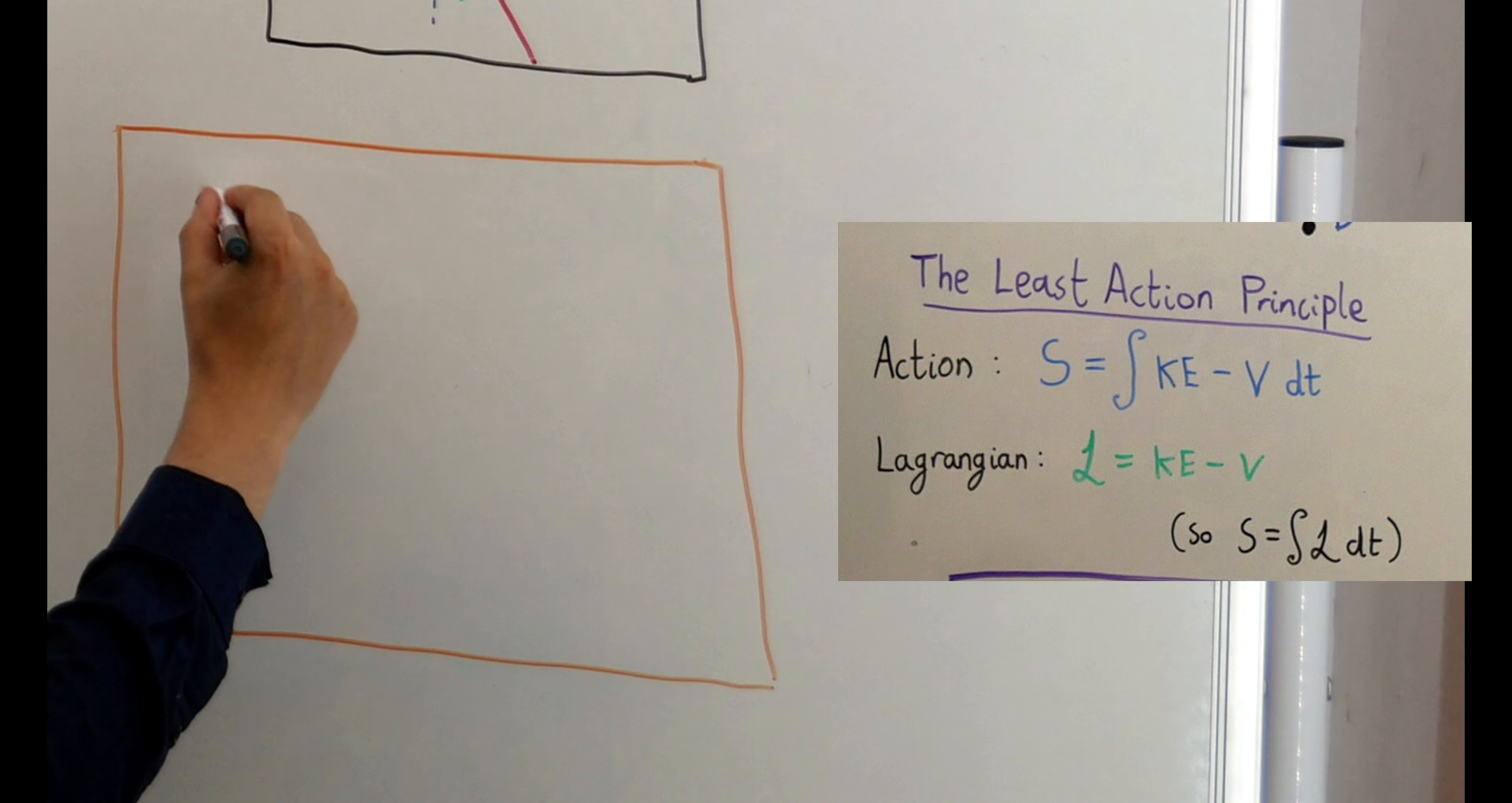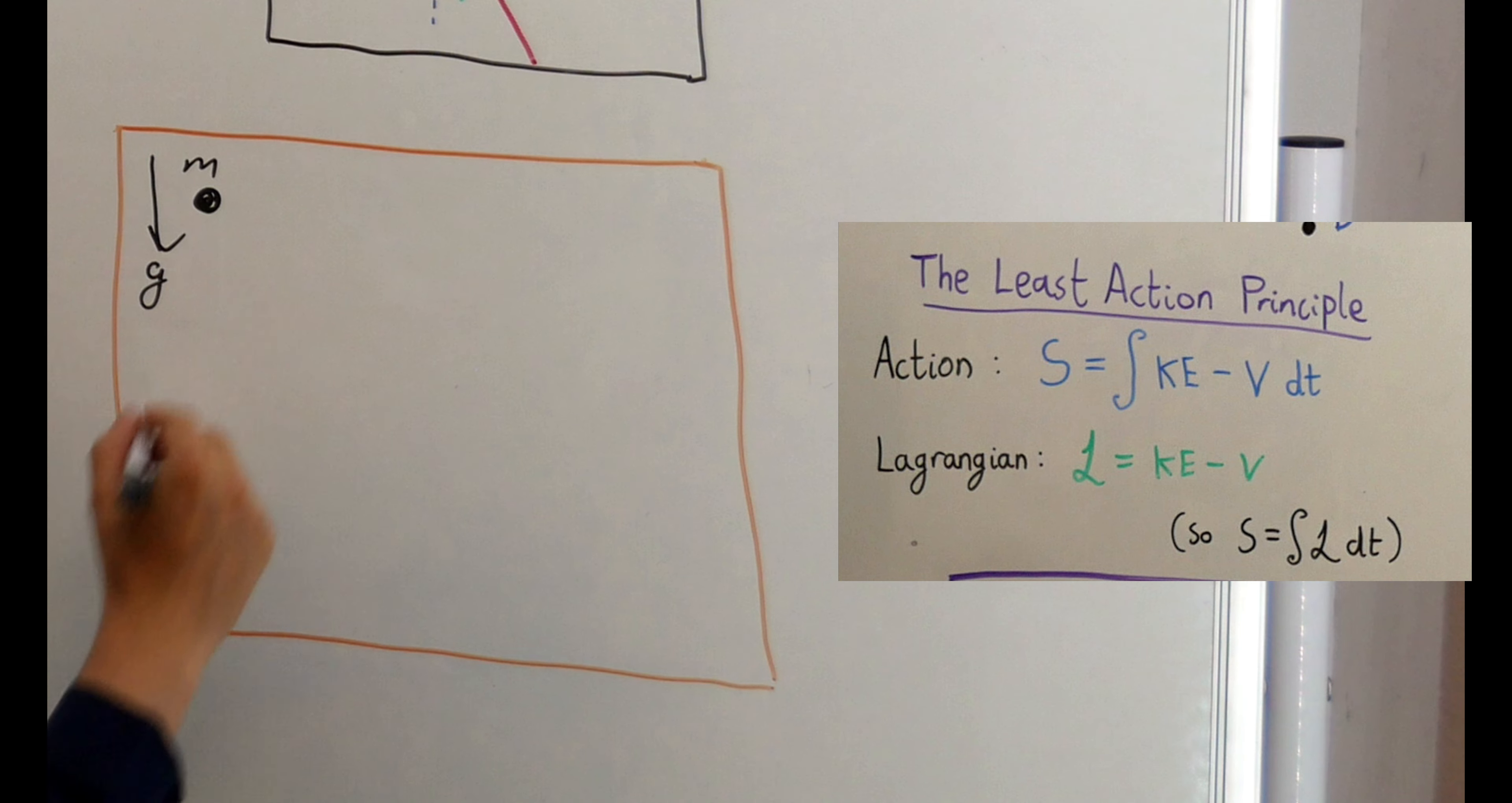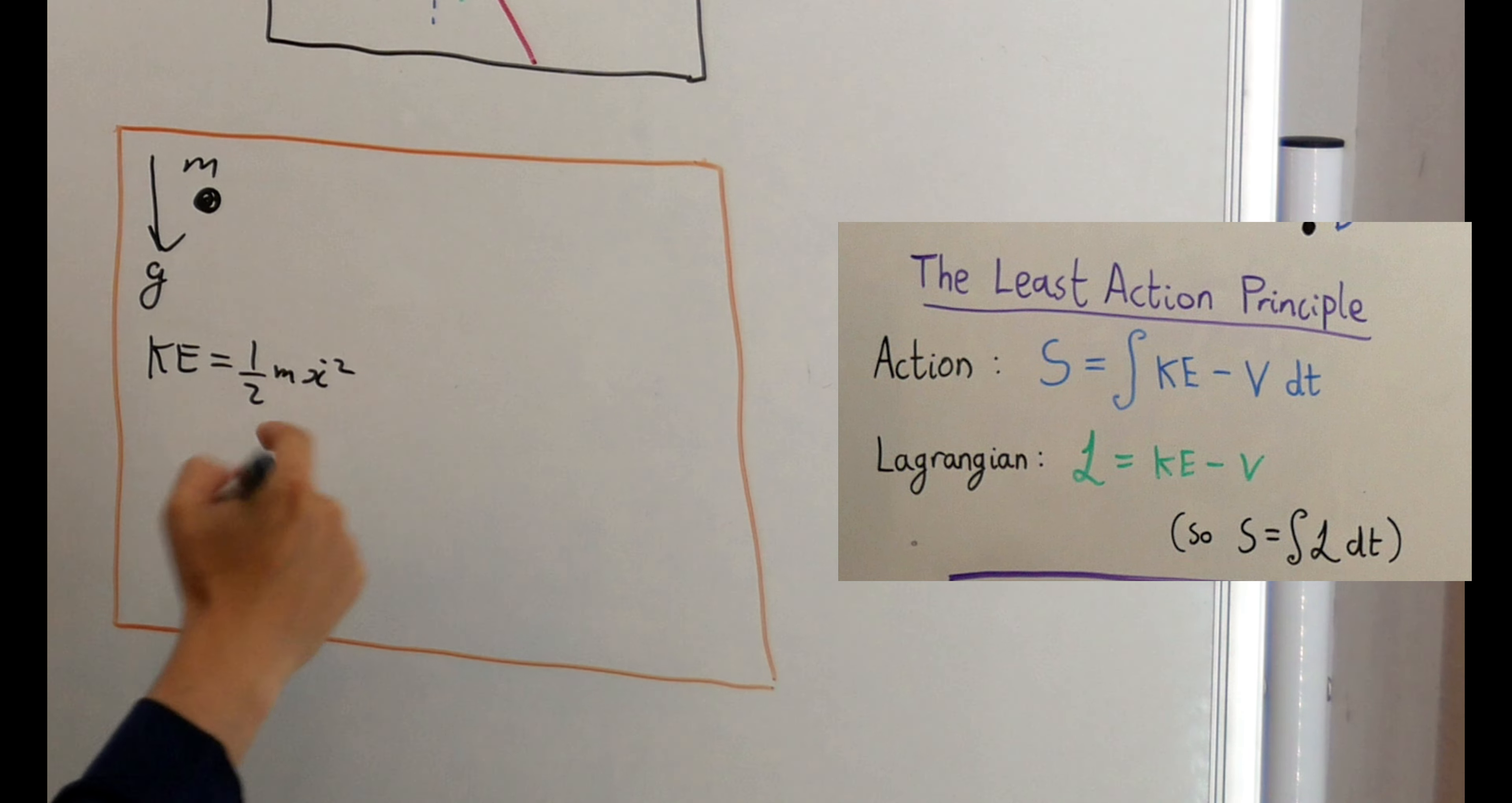Let's suppose we just have a single particle of mass m in a gravitational field with gravitational field strength g. This means that the kinetic energy of the particle will be given by half m x dot squared, where m is the mass and x dot is its velocity, and its potential energy v will be given by m g x, where x is the height of the particle.